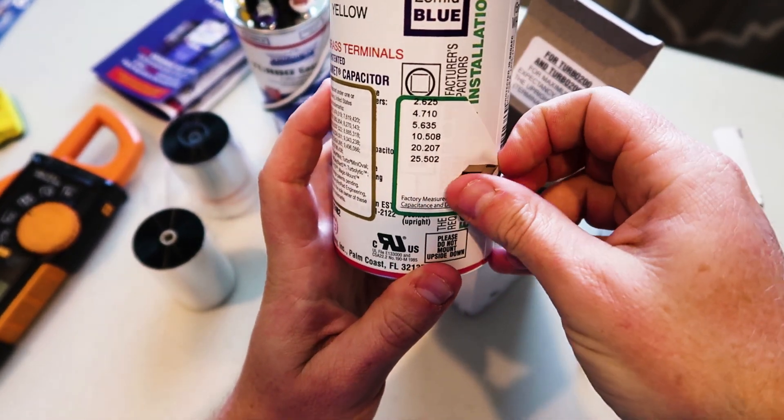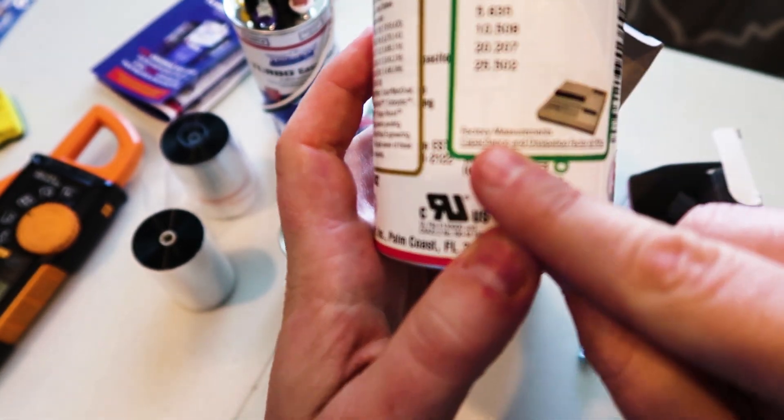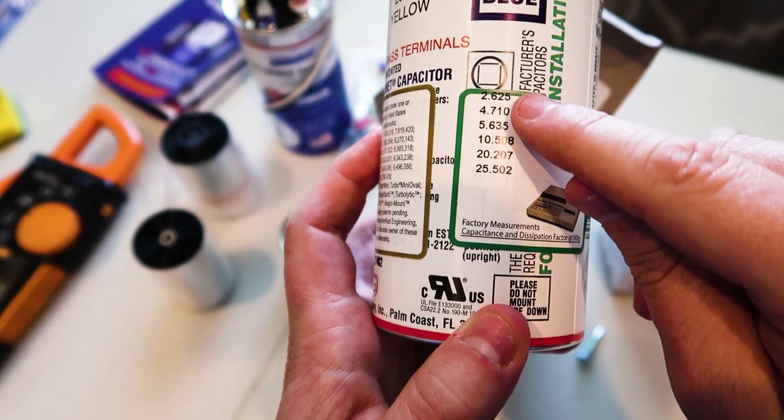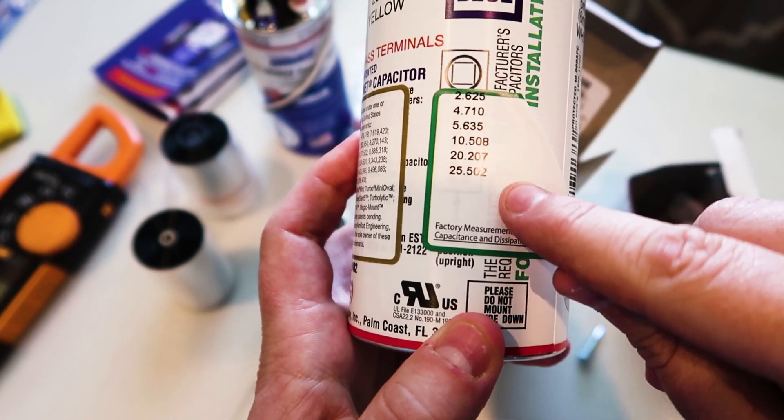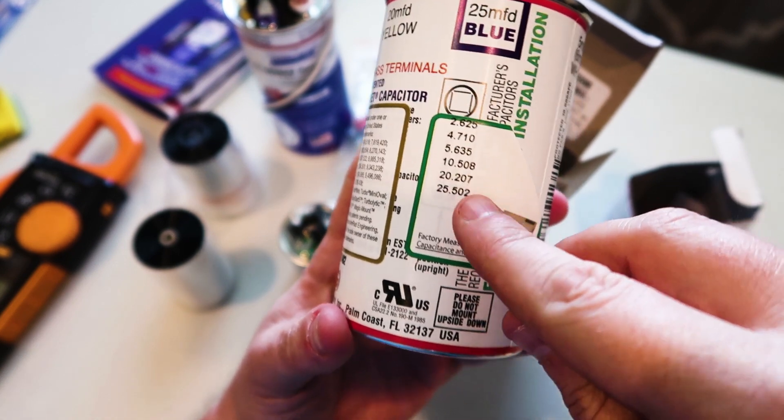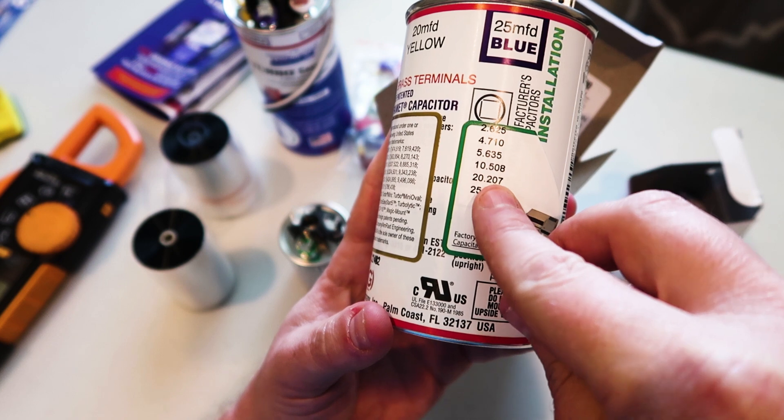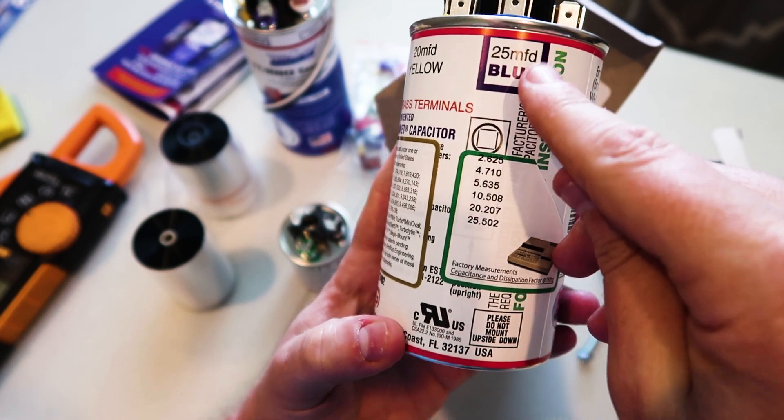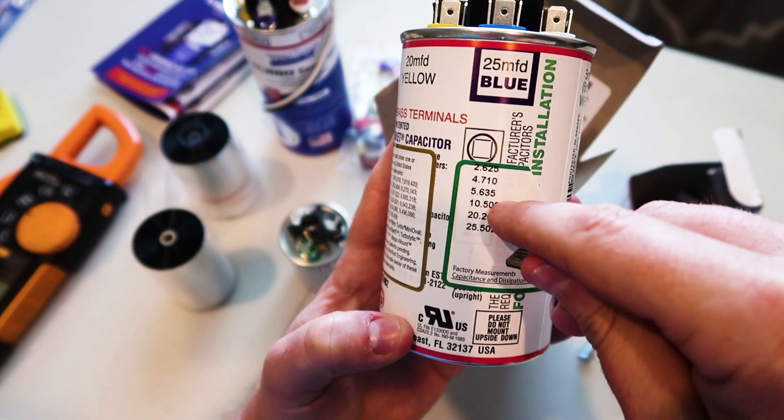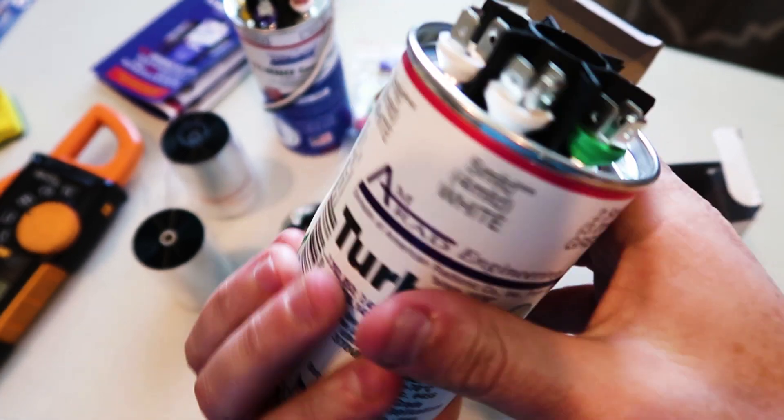One thing I really like about these is they've actually got the factory measurements. So these are the measurements that they took of this particular capacitor for every single capacitor inside of here. When you make a capacitor, it's never exactly 30, it's never exactly 25, 10, whatever. So it shows you here exactly what each capacitor in here is rated at. So the 25 is 25.502 and then the 20 microfarad is 20.207 and then down the line.